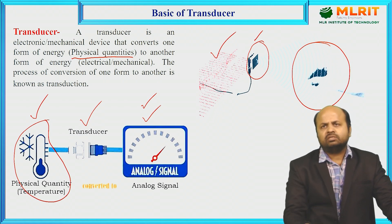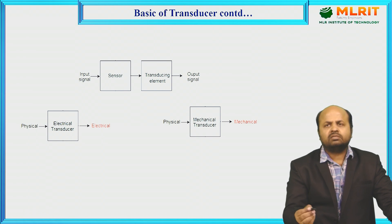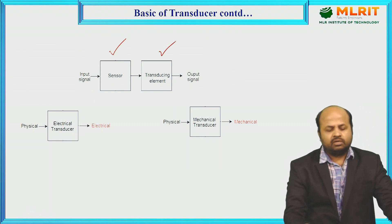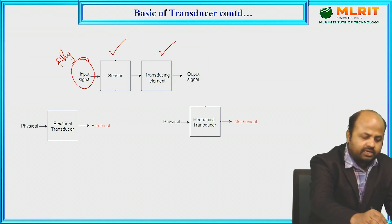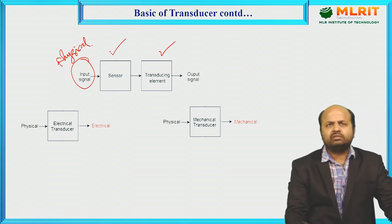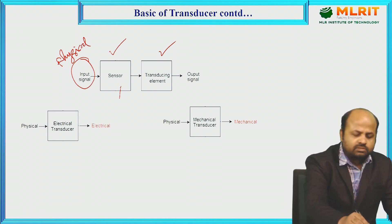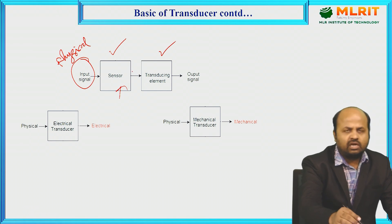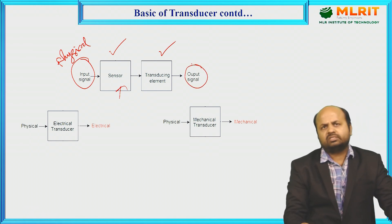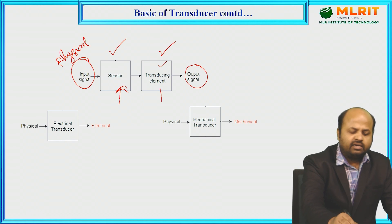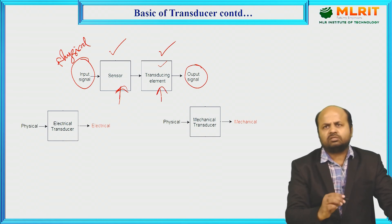A transducer is a device which converts physical quantities into an electrical signal or some mechanical displacement. A transducer basically consists of a sensor and one transducing element. Physical quantities — such as length, mass, or time — are given as input signals. With the help of a sensor, the physical quantity is converted into a raw signal. After that, this raw signal is processed by the transducing element to give the final output signal.